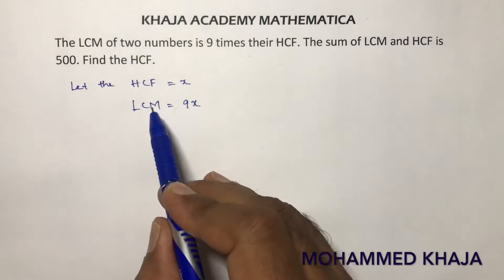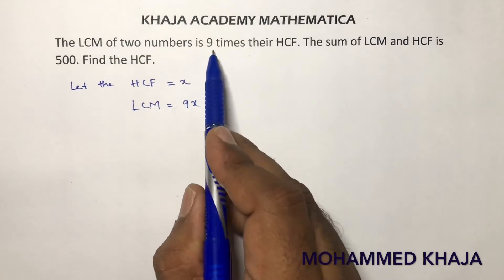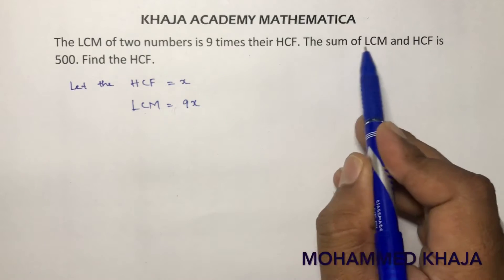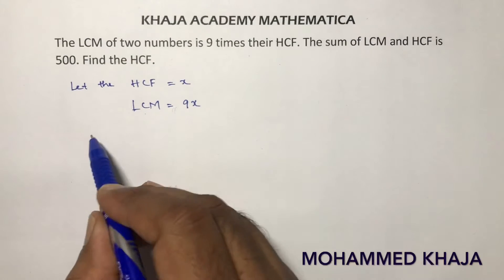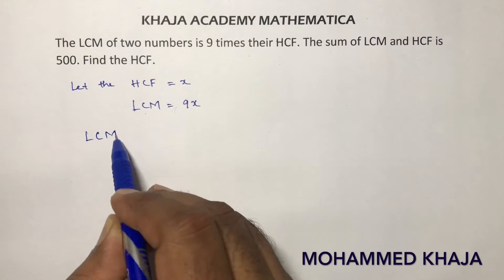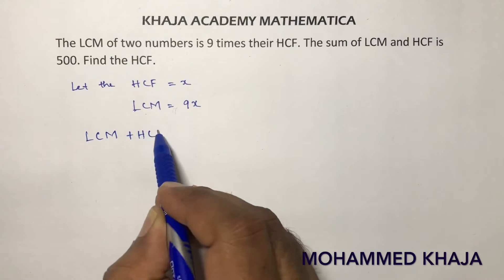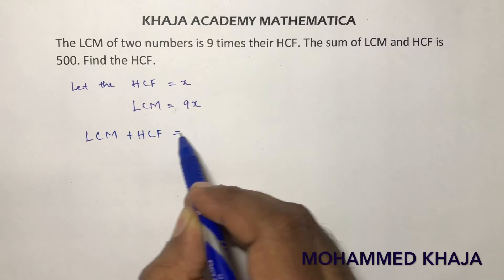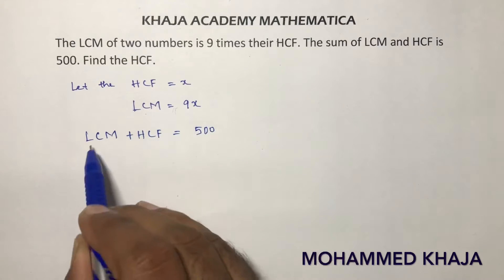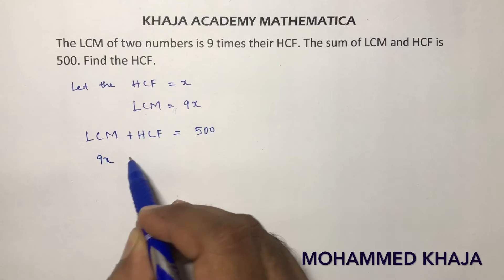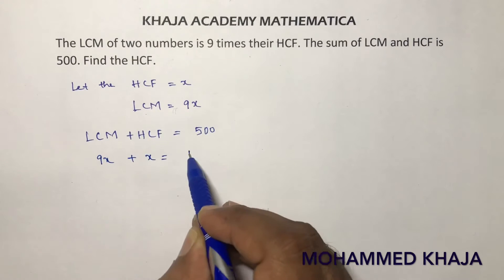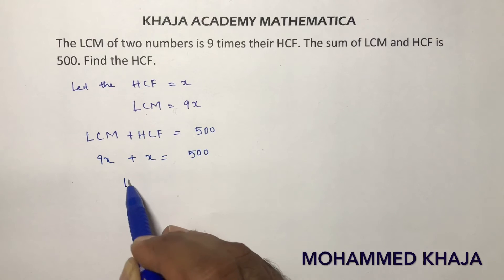LCM is 9x because LCM is 9 times HCF. They told sum of LCM and HCF is 500. So, LCM plus HCF: 9x plus x equals 500.